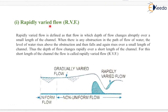Rapidly varied flow is defined as that flow in which the depth of flow changes abruptly over a small length of channel, as seen here. When there is any obstruction in the path of flow of water, the level of water rises above the obstruction and then falls and again rises over a small length of channel. Thus the depth of flow changes rapidly over a short length of the channel, and for this short length the flow is called rapidly varied flow.